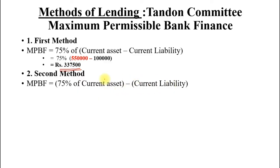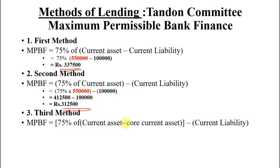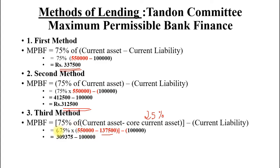Method 3: Core current asset = 25% of CA = 5,50,000 × 25% = 1,37,500. Then 75% of (CA − core CA) − CL = 75% of (5,50,000 − 1,37,500) − 1,00,000 = 75% of 4,12,500 − 1,00,000 = 3,09,375 − 1,00,000 = 2,09,375. These are the three methods of maximum permissible bank finance as per the Tandon Committee.